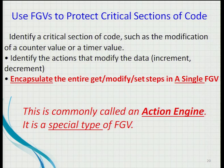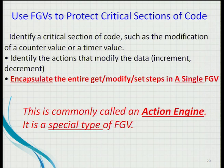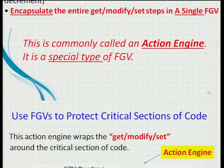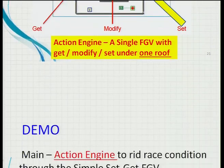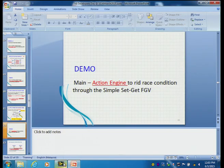The idea is to create an action engine, whereby you encapsulate all the methods entirely into a single FGV. If you need to modify and then set — all under one FGV called the action engine. As Nancy says, this actually protects the critical section of the code. When you do the actions — increment or decrement — the value goes straight back into the uninitialized shift register itself, so you eliminate this problem.